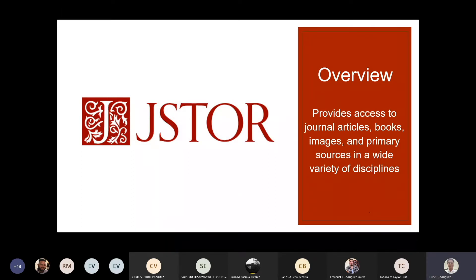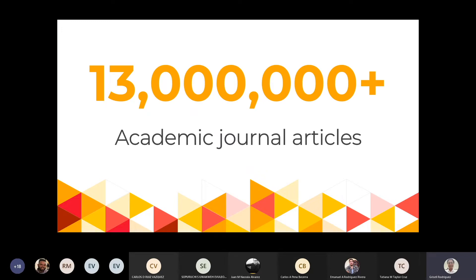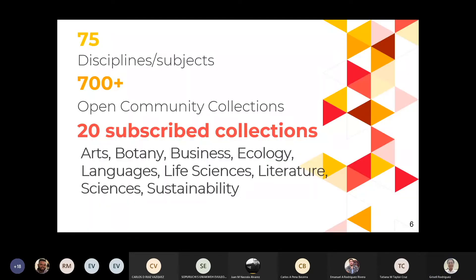JSTOR te provee una base de datos con artículos de revista, capítulos de libros — aunque no tenemos suscripción a libros, sí pueden encontrar capítulos de libros en la búsqueda — también imágenes, recursos primarios en muchas disciplinas. En estos momentos hay aproximadamente 13 millones de artículos de revistas profesionales dentro de JSTOR, dentro de 75 disciplinas o temas.